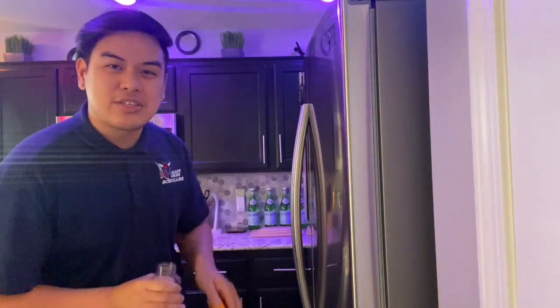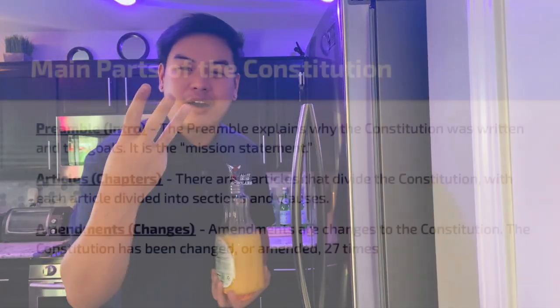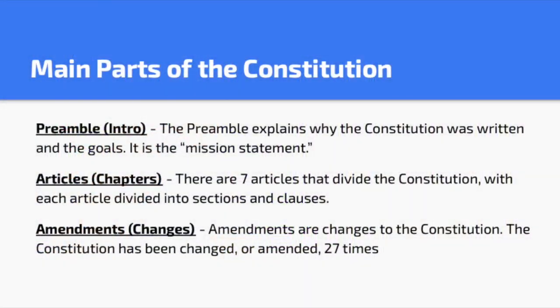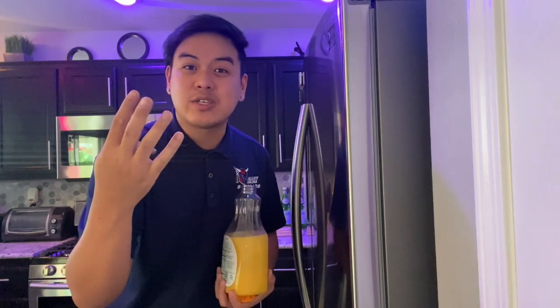Let's start off by going over the main parts of the U.S. Constitution. There are three main parts: preamble, articles, and amendments. But there's also a secret fourth part.